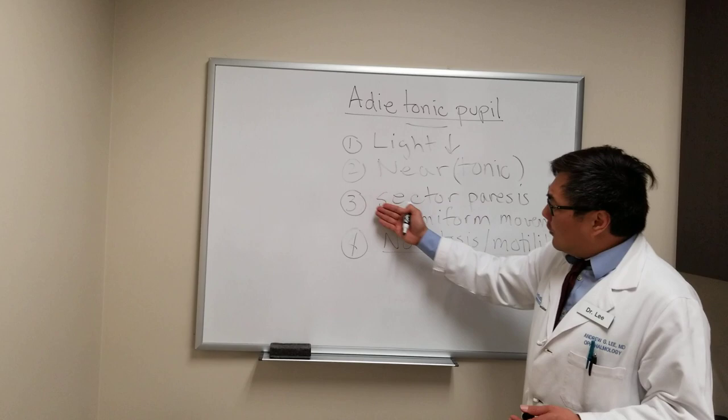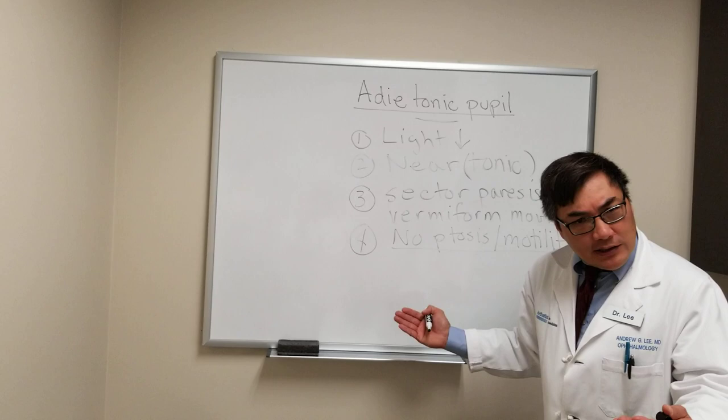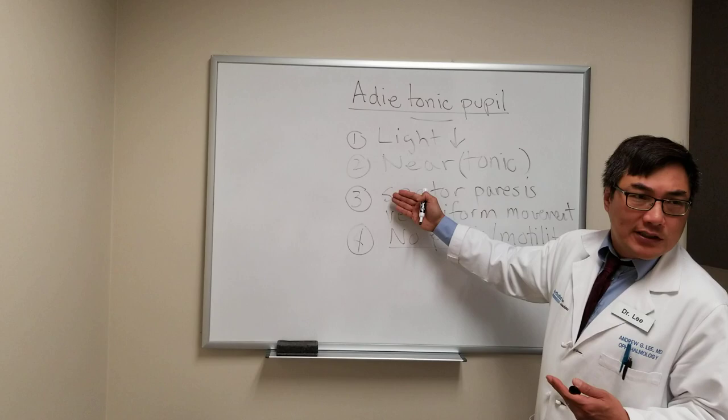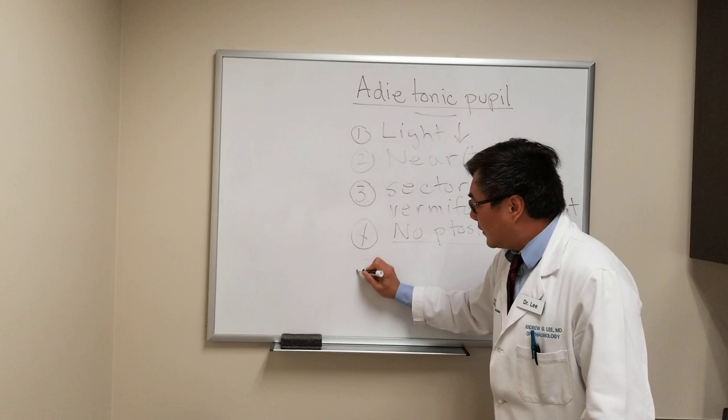The differentiating feature, of course, is the sector paresis. In a third nerve palsy, we would not expect a sector paresis. We also can't have any ptosis or motility deficit. So first, make sure it's not a third nerve palsy. Look for the sector paresis. Once we have tonic light-near dissociation, we can say that this is probably an Adie's tonic pupil clinically.